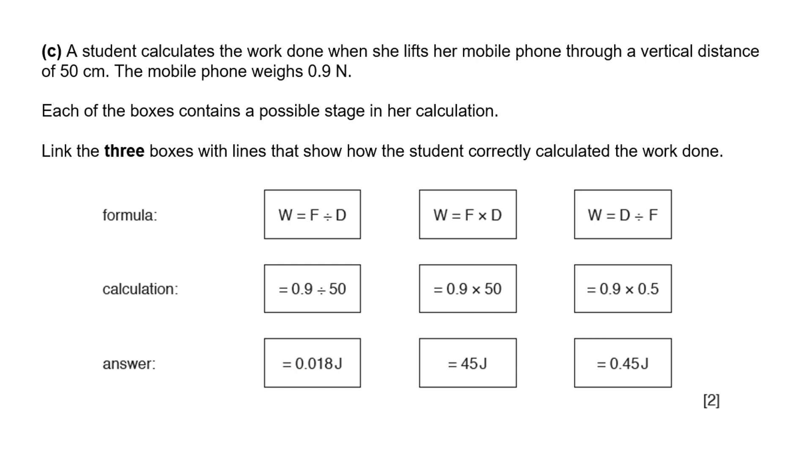A student calculates the work done when she lifts her mobile phone through a vertical distance of 50 centimeters. The mobile phone weighs 0.9 newtons. Select the three stages that show the correct calculation. First we need the equation: work done is force times distance. Our distance needs to be in its standard unit of meters, which is why it's the one on the right. We need the distance in meters, which then gives us this value once we calculate it.